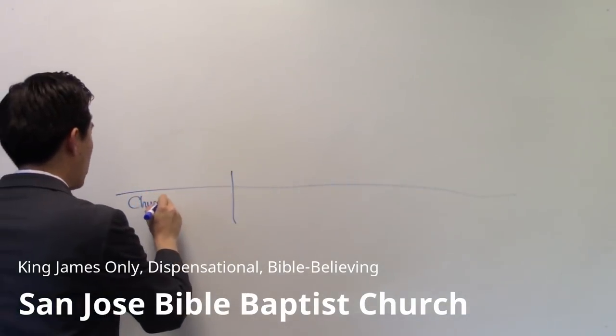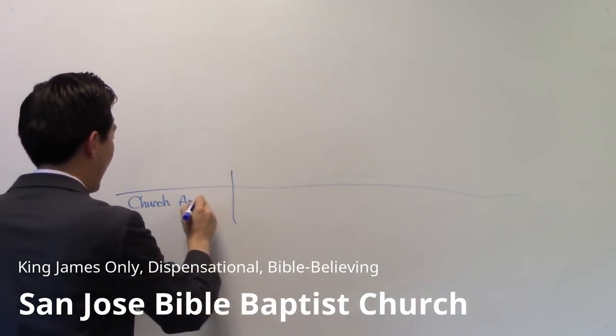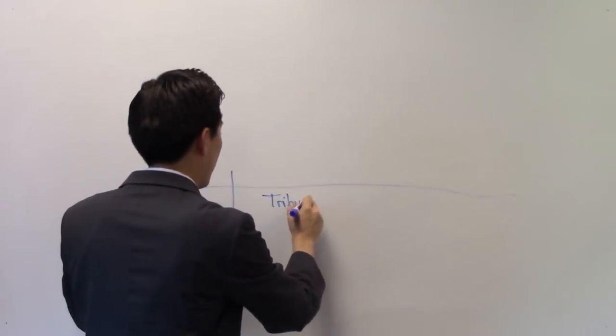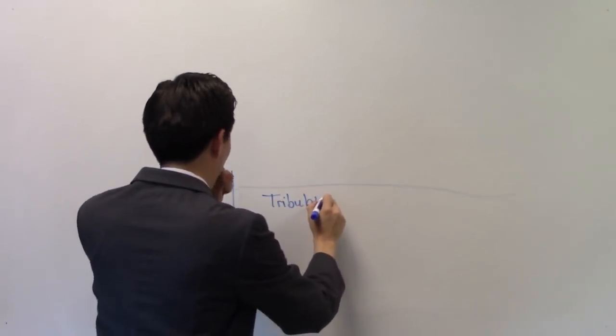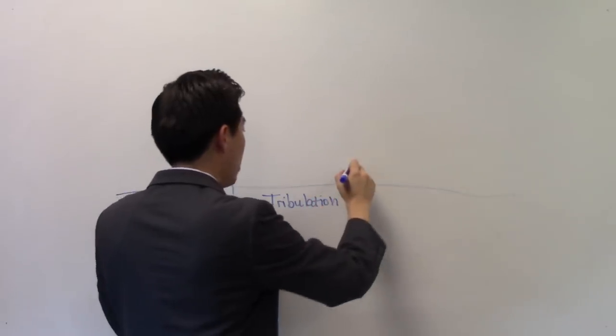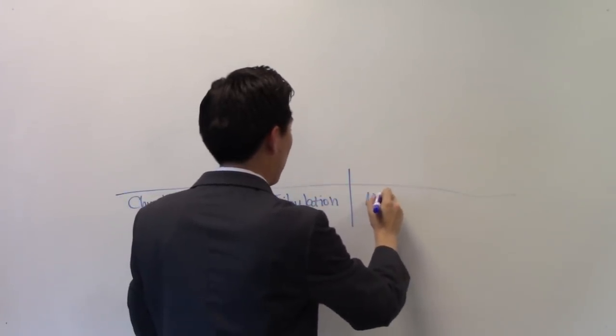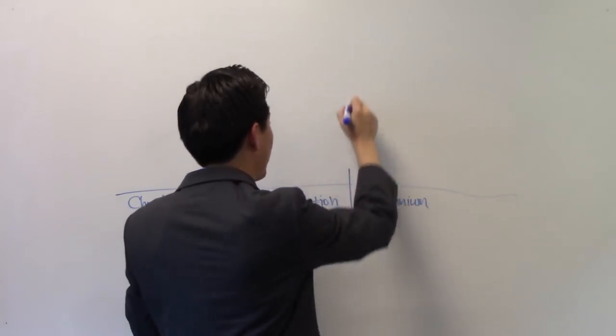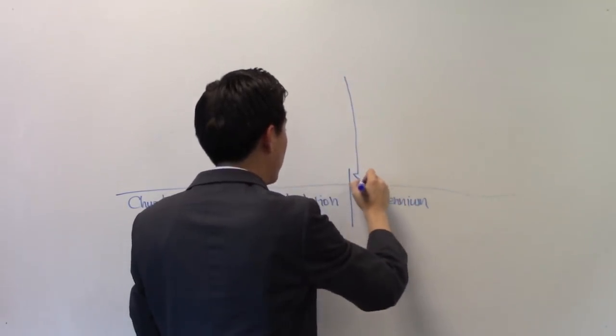We're going through the church age here, right? That's today's day and age. And then here's the tribulation. And then after that, you've got the millennium here, which is 1,000 years. And then right here is the second advent of Jesus Christ.